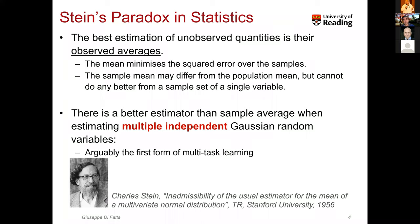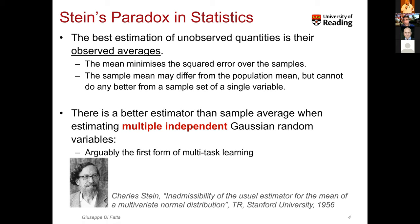Stein in the 1950s introduced a new point to this problem. He considered multiple independent Gaussian random variables — and I underline independent. In this case, we want to estimate each single variable, and he showed that the better estimate is not the sample average. At first this was quite controversial, but ultimately he convinced the community by demonstrating his theorem. Arguably, this is the first form of multi-task learning.